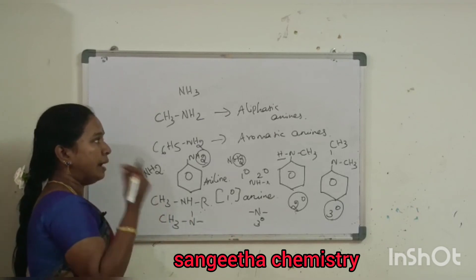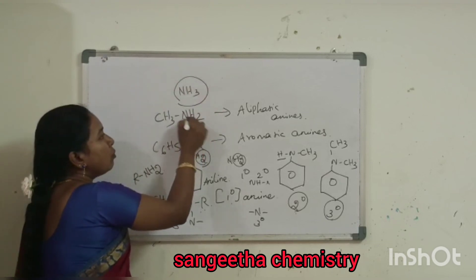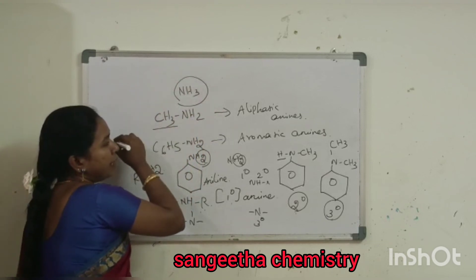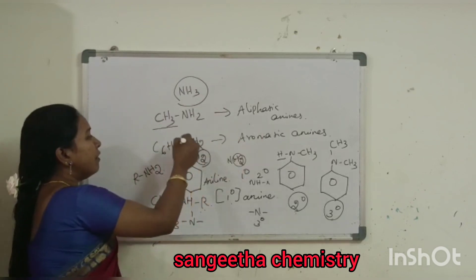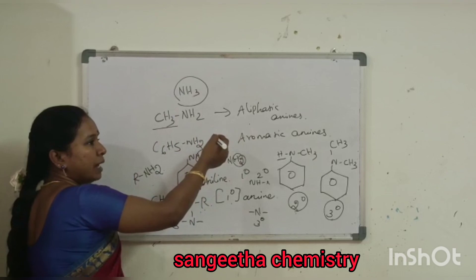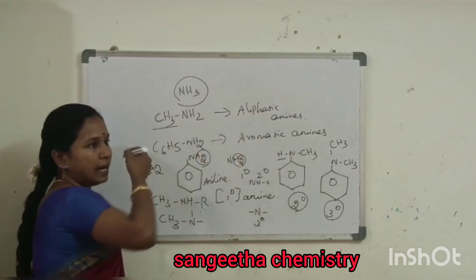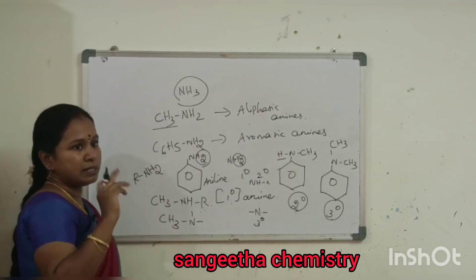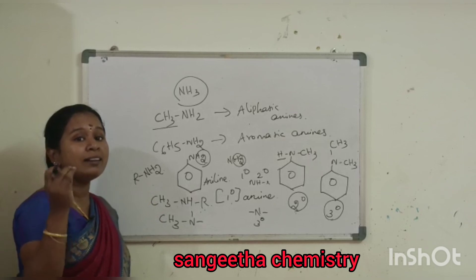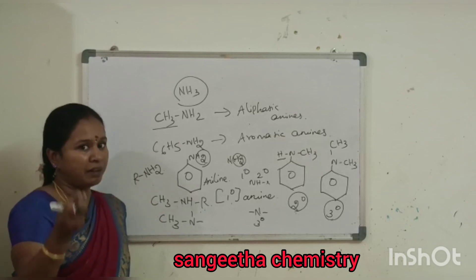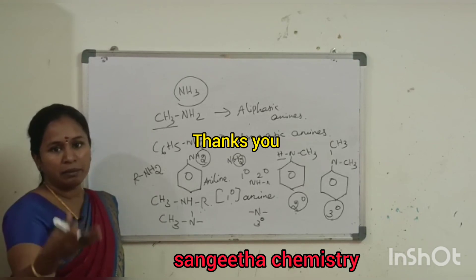So to conclude: amines are the derivatives of ammonia. When one hydrogen is replaced by an alkyl group, they are aliphatic amines. When replaced by an aryl group, they are aromatic amines. Based on the number of hydrogens replaced on nitrogen, amines are classified as primary, secondary, or tertiary.